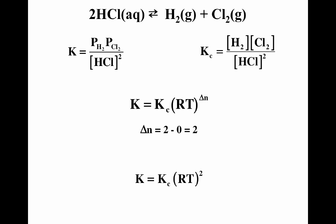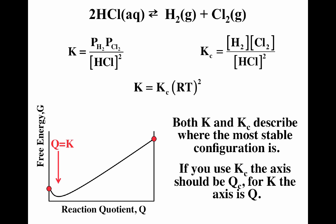Using the equation K equals K sub C times RT to the delta N, we have 2 gas particles as products and zero gas particles as reactants, so 2 minus 0 is 2, giving K equals K sub C times RT squared. If you're going to use K, you have to use Q. If you're going to use the thermodynamic K, you have to use the thermodynamic Q. If you're going to use K sub C, then you have to use Q sub C. If your K is just in concentrations, then your Q has to be just in terms of concentrations.